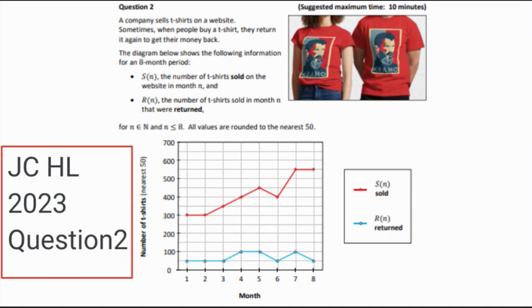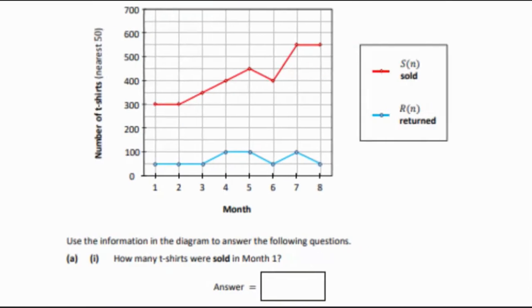In Part 1, we just want to get a value off the graph. We want to find out how many t-shirts were sold in Month 1. So we can see that 300 are sold in Month 1.